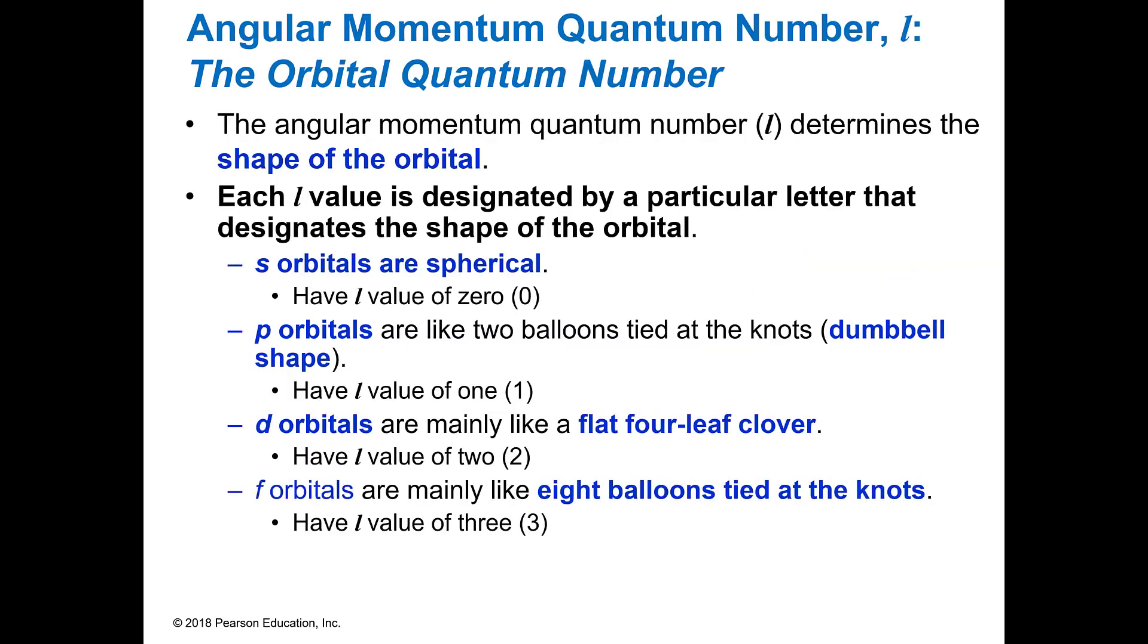The angular momentum quantum number, which is L, tells us what the shape is. And there's four shapes, S, P, D, and F. If it's an S, its value of L is 0. If it's a P orbital, its value is 1 for L. D's value is 2 for L. And if it has an F orbital, it has a value of 3. And these are very, when you get past the P orbitals, you get some really interesting shapes for these areas where you could find the electrons.